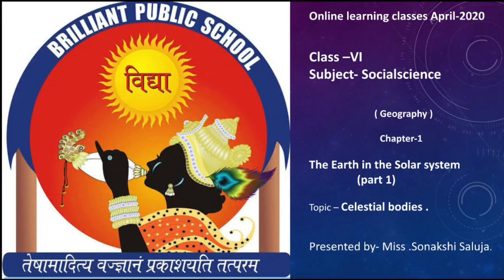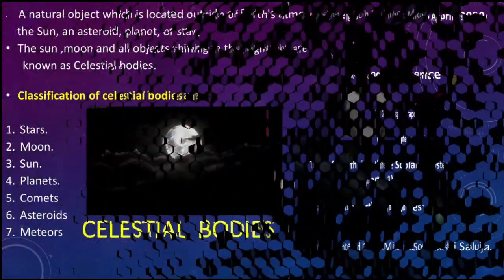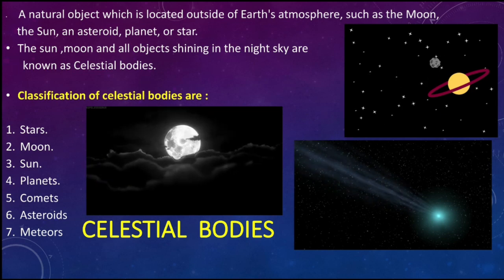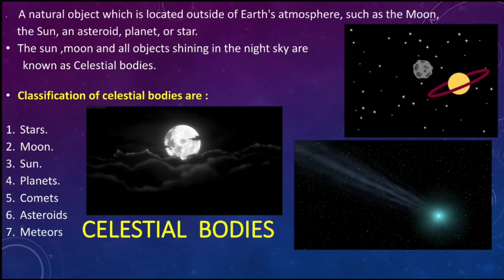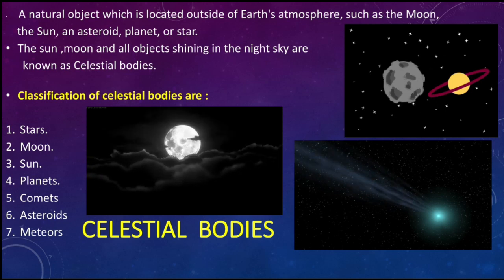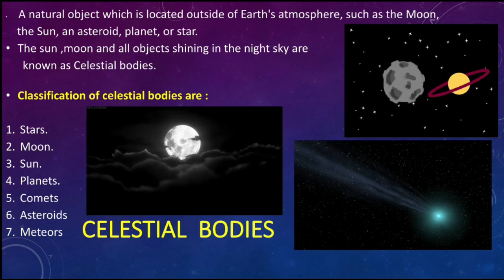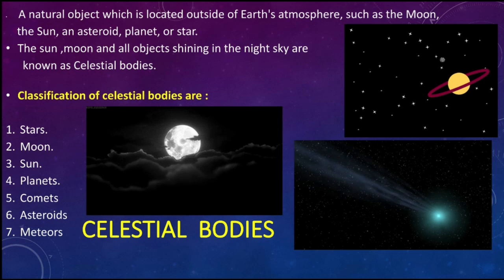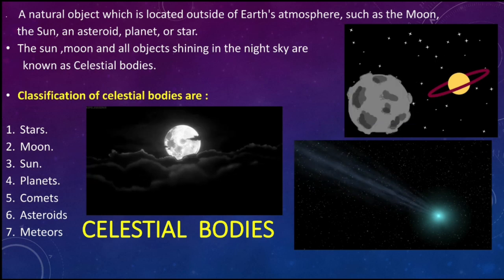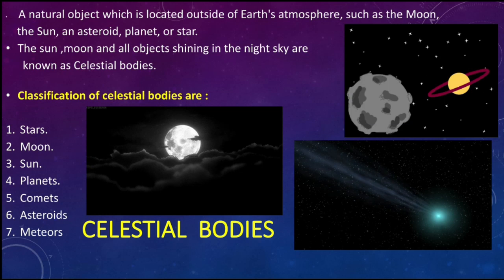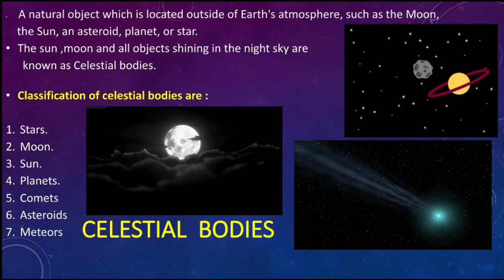First, we are going to start with celestial bodies. When you look in the sky, how wonderful it looks — the shining dots you would have seen. These are the different types of celestial bodies present in our universe. A celestial body is a natural object located outside of the Earth's atmosphere. Some examples are the Moon, the Sun, an asteroid, a planet, or a star.